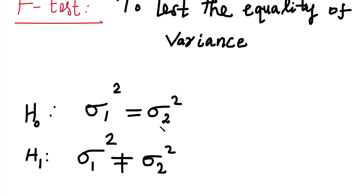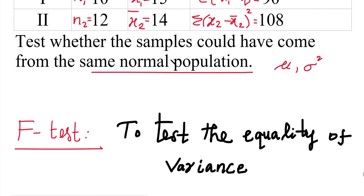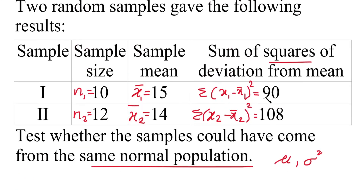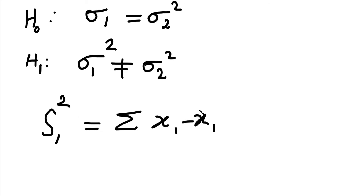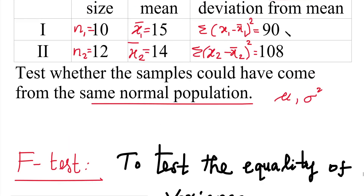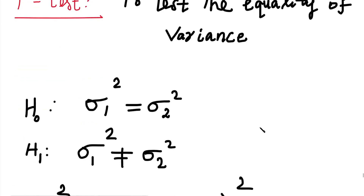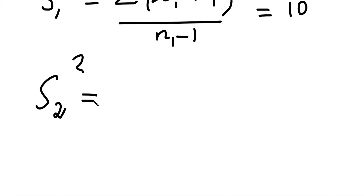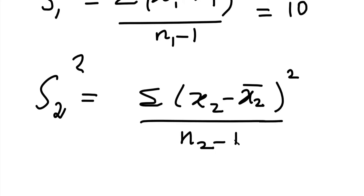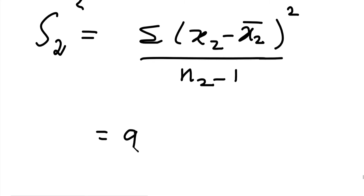We calculate S1 squared and S2 squared to use in the F calculation formula. S1 squared equals summation of (x1 minus x̄1) squared divided by (n1 minus 1), which is 90 divided by 9, equal to 10. S2 squared equals summation of (x2 minus x̄2) squared divided by (n2 minus 1), which is 108 divided by 11, equal to 9.82.